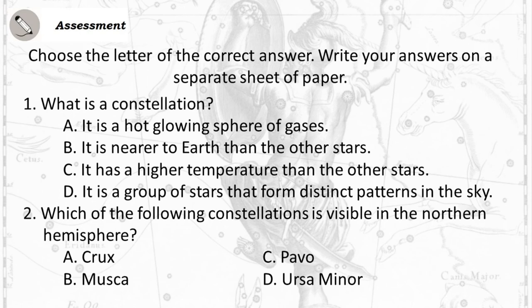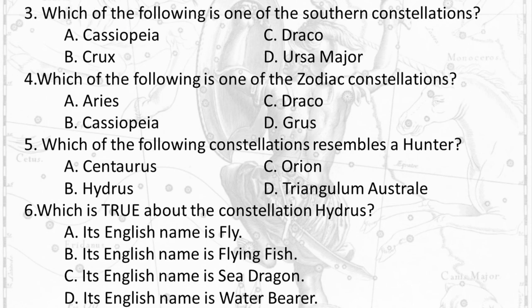Question 2: Which of the following constellations is visible in the Northern Hemisphere? Question 3: Which of the following is one of the Southern constellations? A. Cassiopeia.